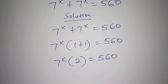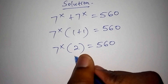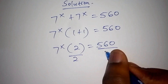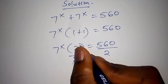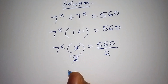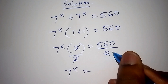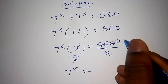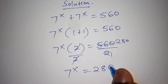From there we shall divide both sides by 2 — so 2 and 2 shall cancel. We shall have 7 to the power of x is equals to 560 divided by 2, which is equals to 280.